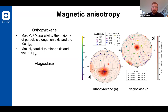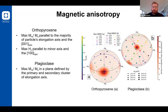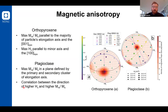In the plagioclase, we have a more equally distributed remanence and coercivity, but in general you have a higher MR over MS in a plane defined by the primary and secondary cluster of elongation axes. The correlation is quite good between coercivity and MR over MS, where both maxima are oriented approximately in the same direction.